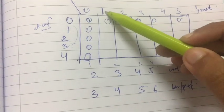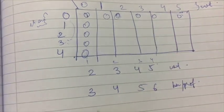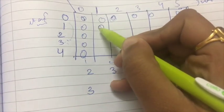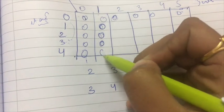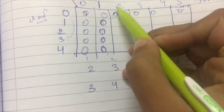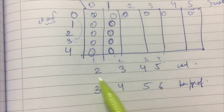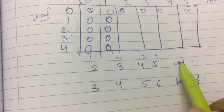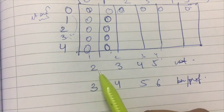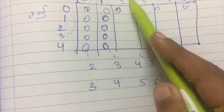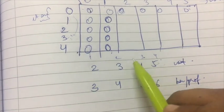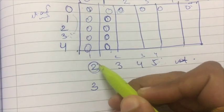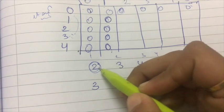Suppose the weight of the bag is 1. Can I put item one, which has weight 2? No. So for column W=1, the value is 0. When the bag weight is 2, item one has weight 2 and benefit 3, so it fits exactly. I put it in and the benefit comes out to 3. I write 3 in cell B[1, 2].